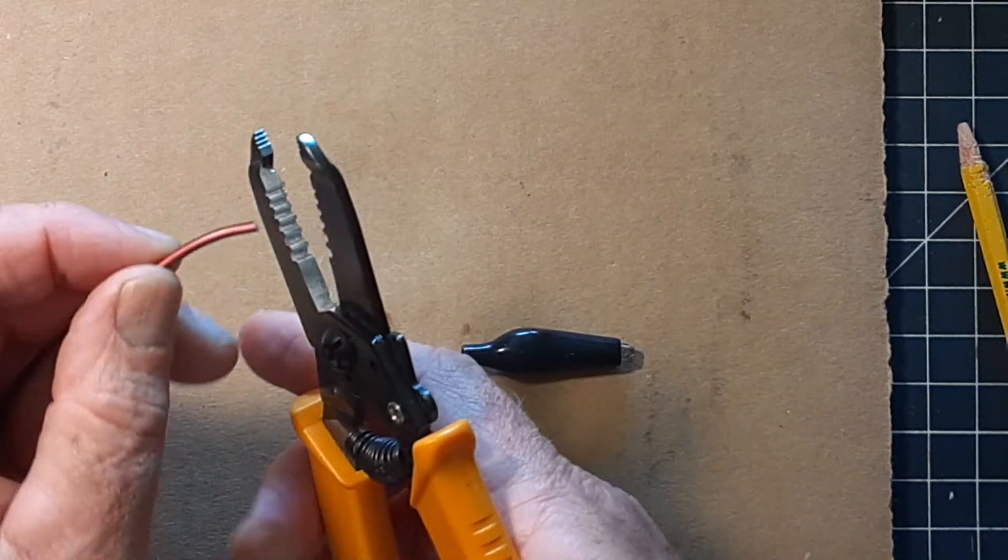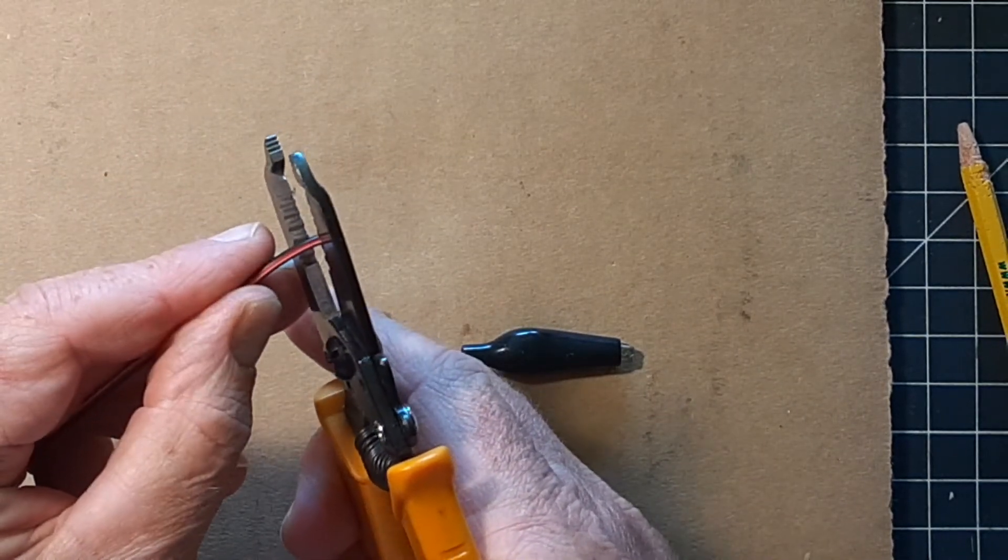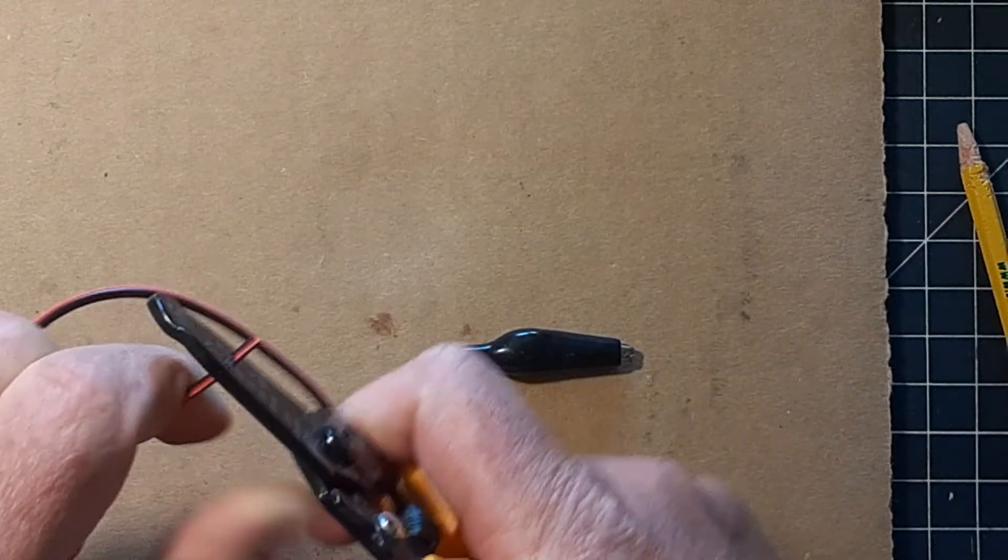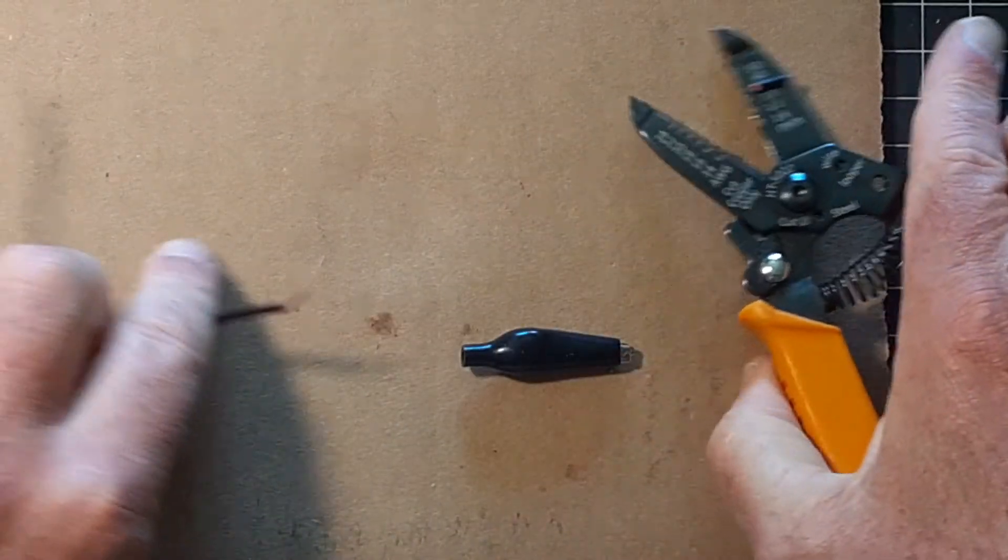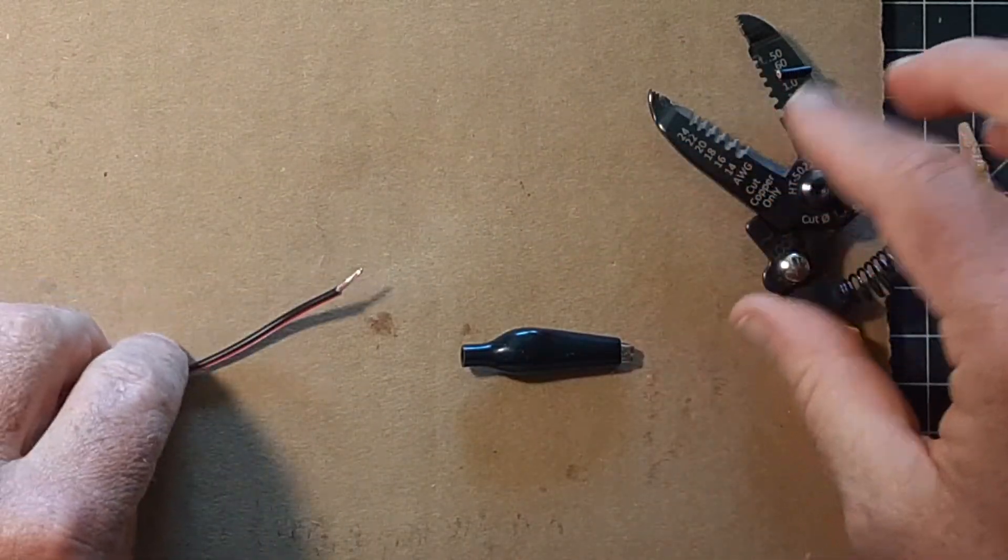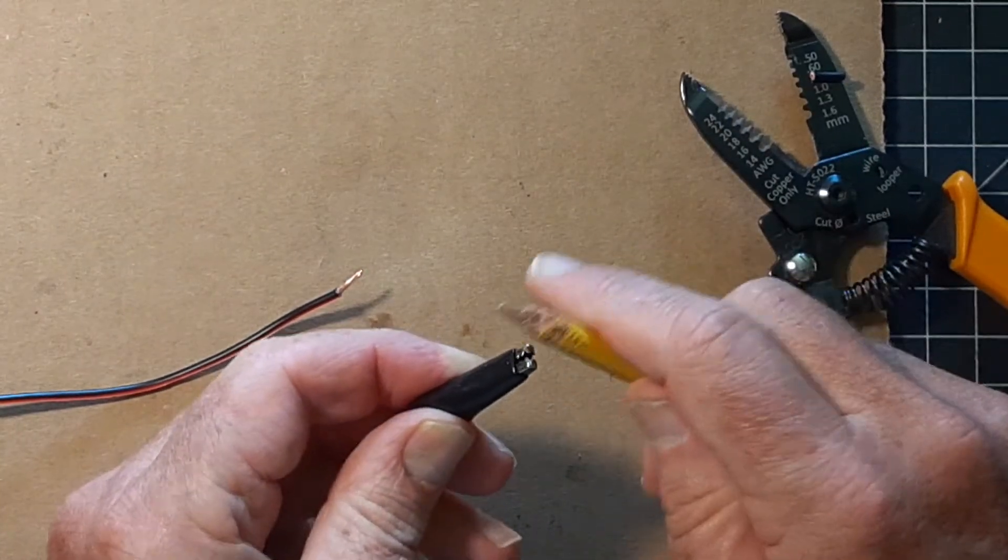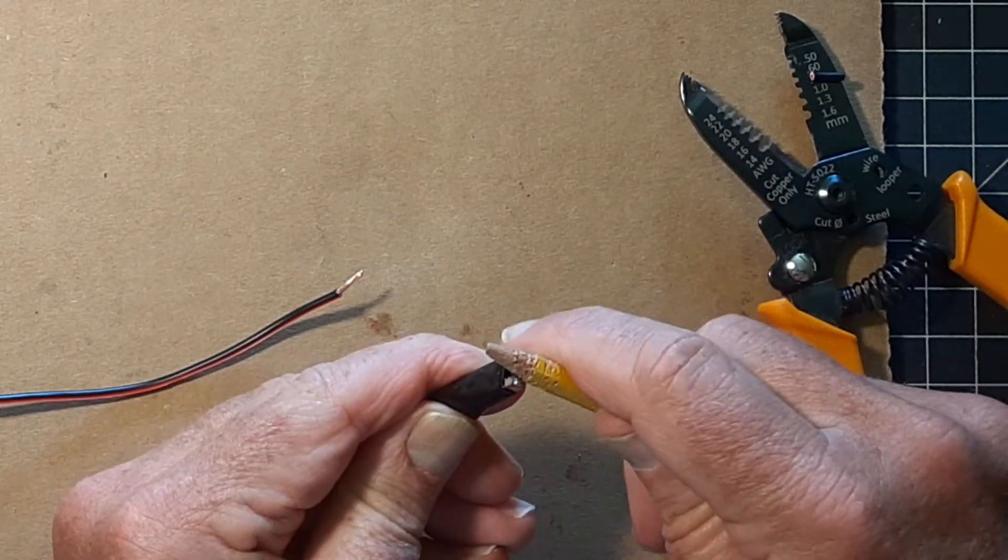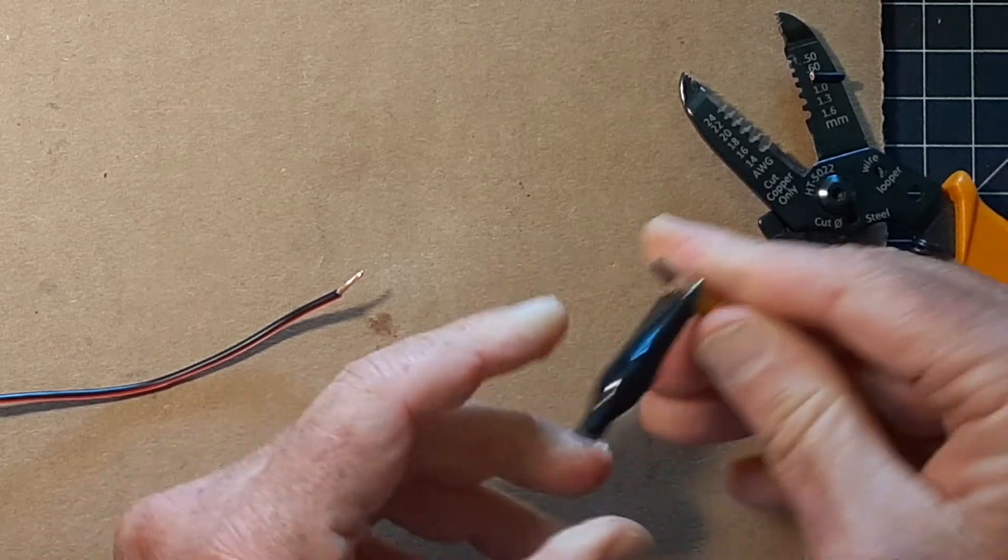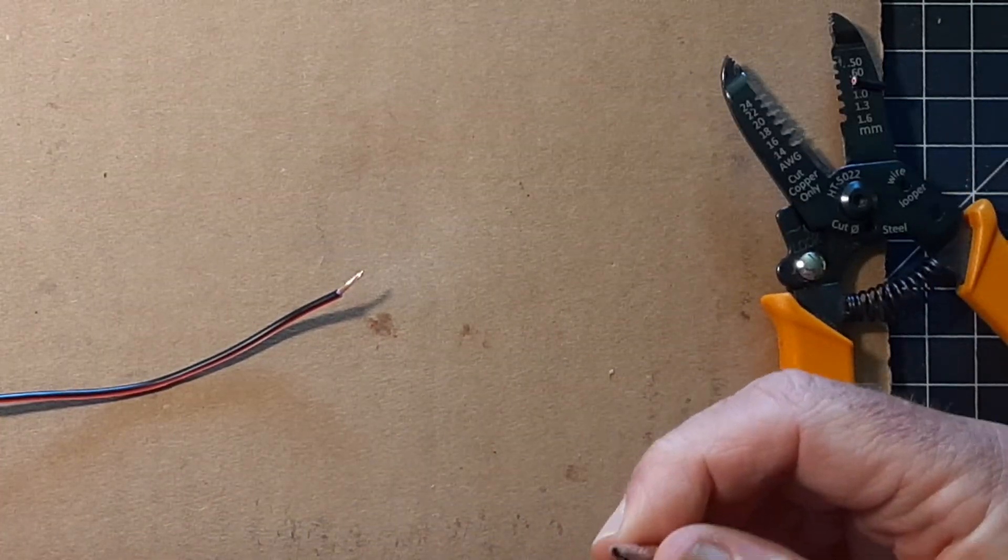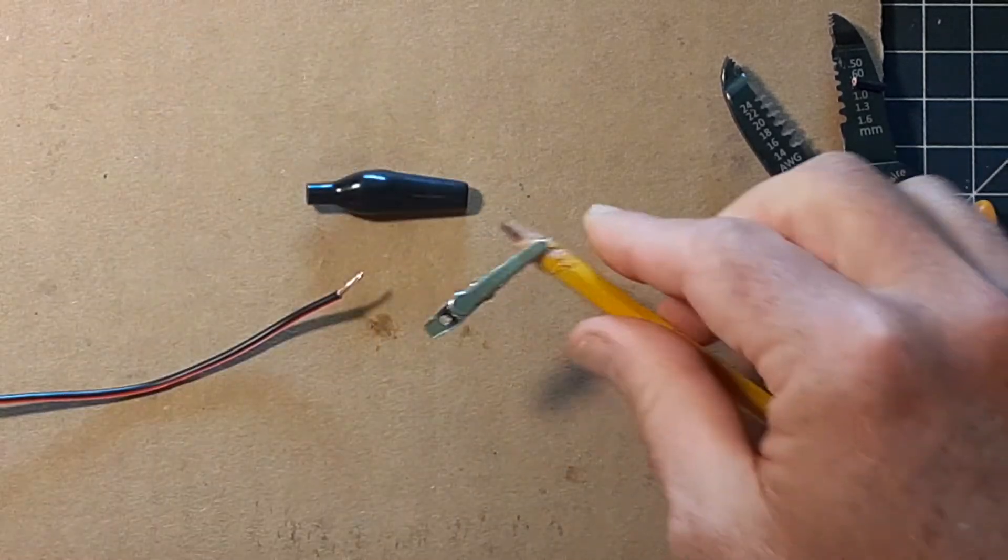So first thing you do is strip about a quarter inch off the end of the wire as I showed you previously, and then you need to use a pencil or something of thickness to open the jaws and then slide the boot off like that.